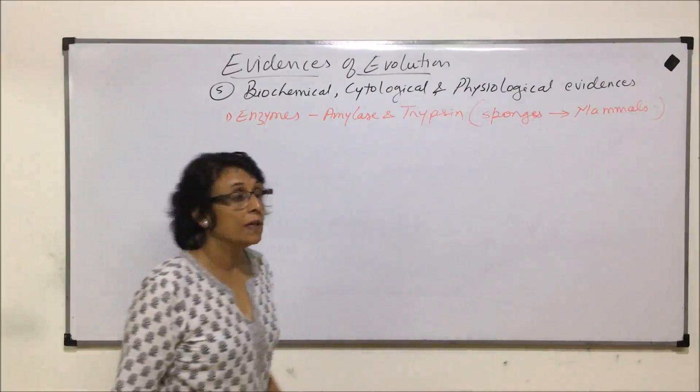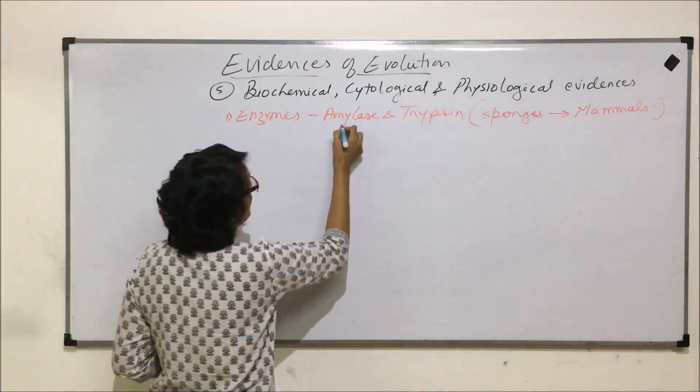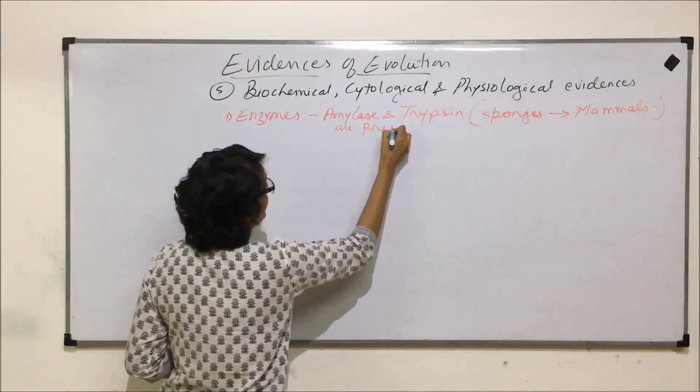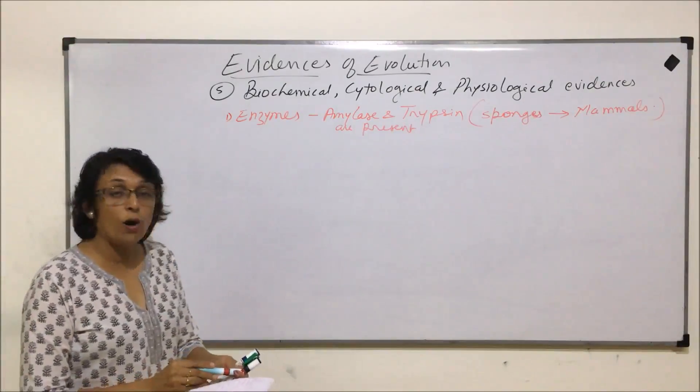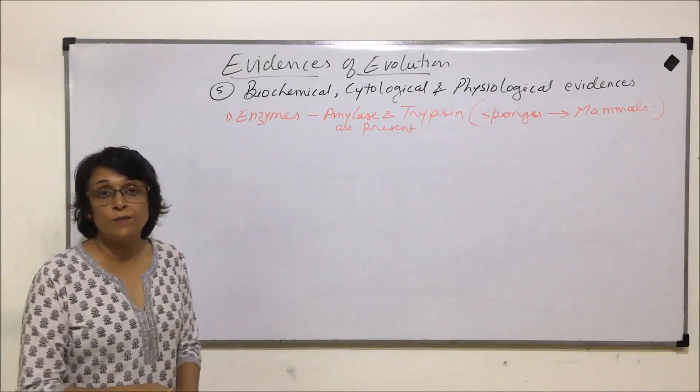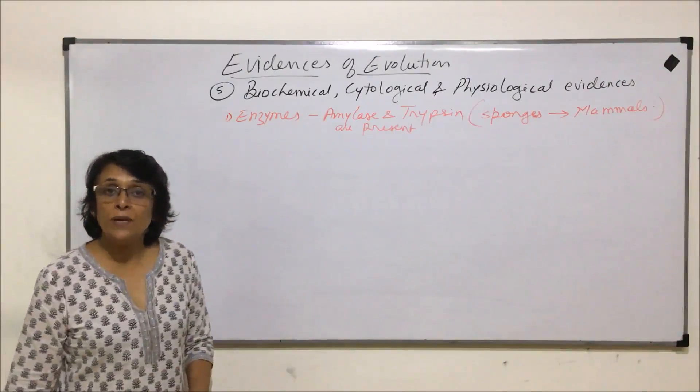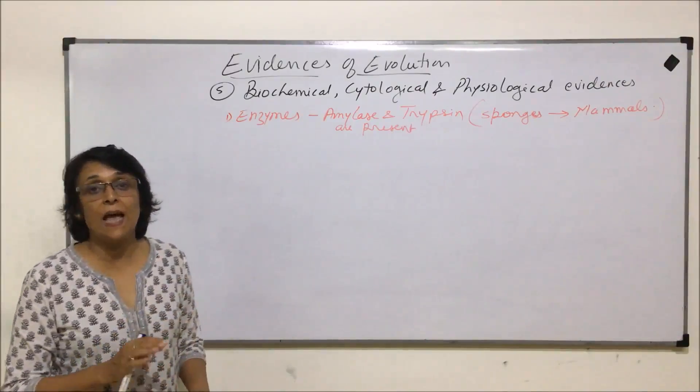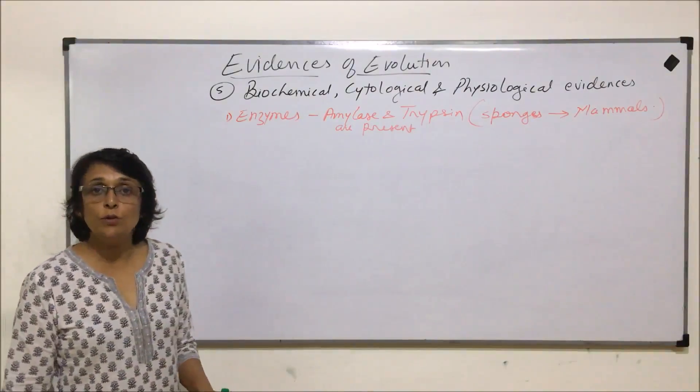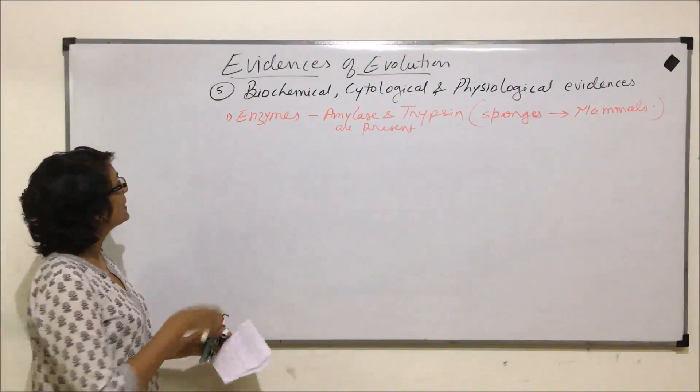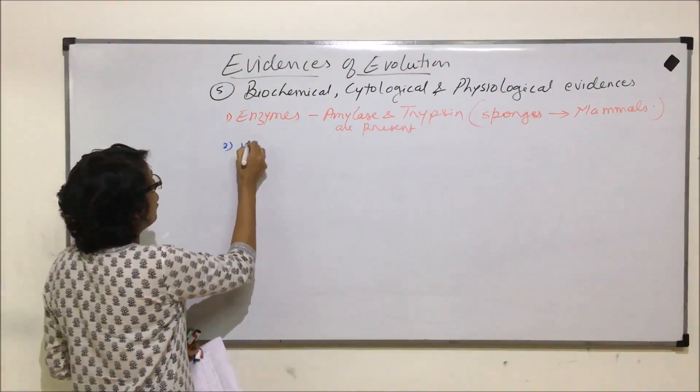So they are common, are present. So amylase and trypsin are basically called universal enzymes. The reason is very obvious - they are present in the entire animal kingdom, starting from sponges, that is Porifera, to Chordata. The next example is of hormones.